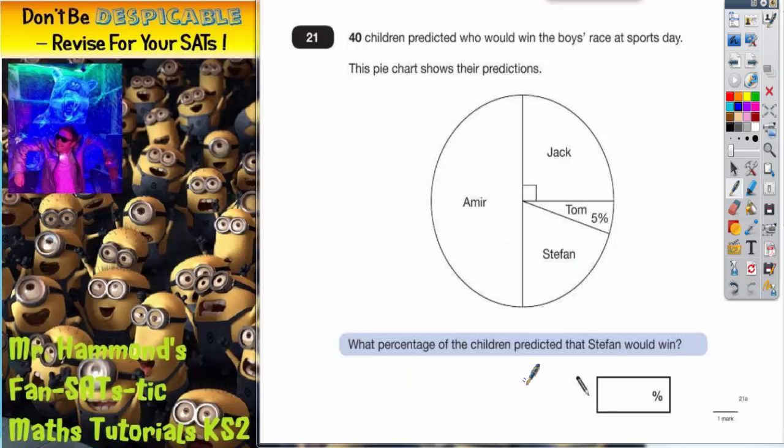What percentage of the children predicted that Stefan would win? Well, let's look at the others first. Amir is taking up half the pie chart, so half the children must have thought that Amir would win. Half as a percentage is 50%, so Amir is 50%. Jack has a little right angle in the corner there.